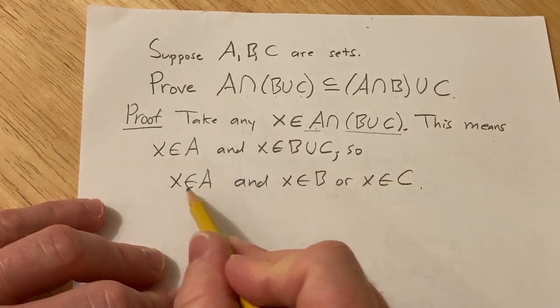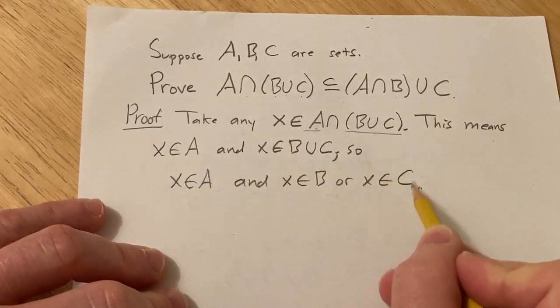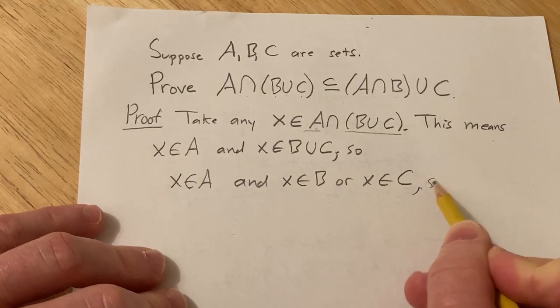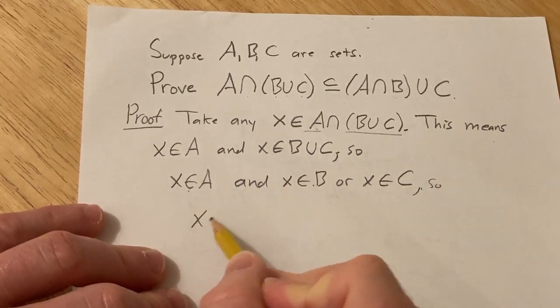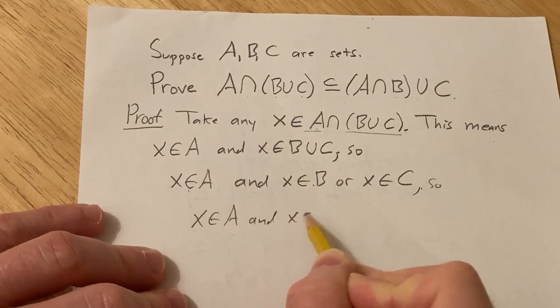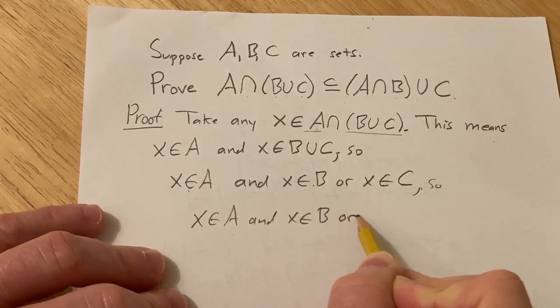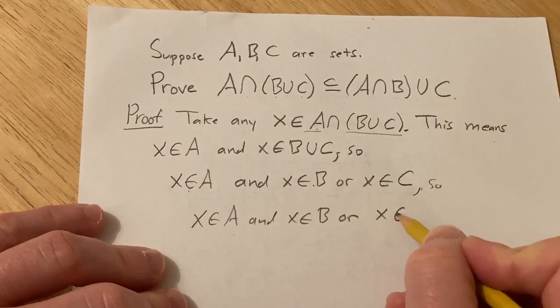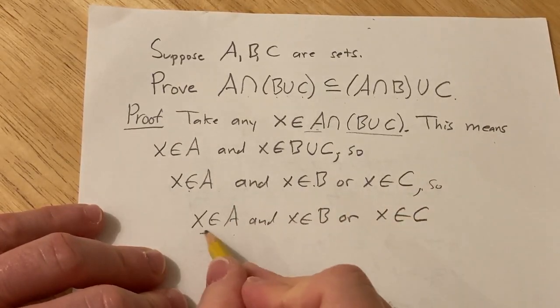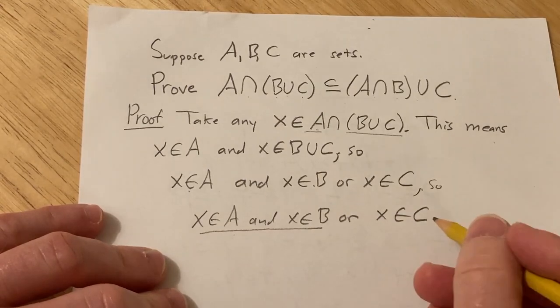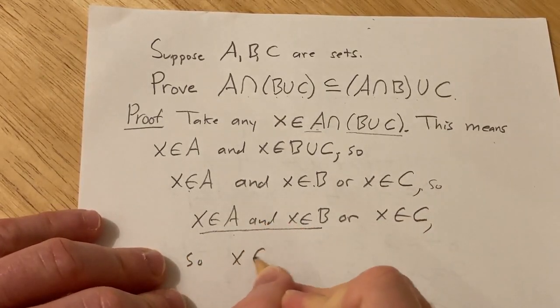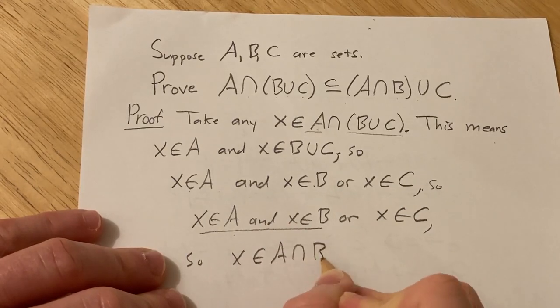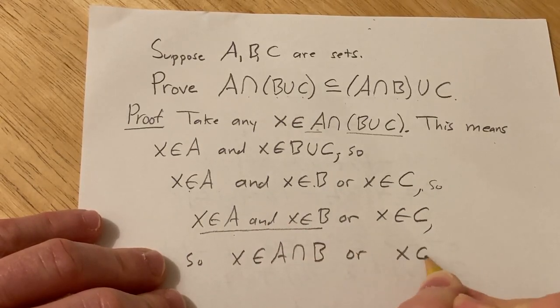And so now we can use some logic to deduce that this means that x is in A and x is in B, or x is in A and x is in B means that x is in the intersection. So x is in A intersected B or x is in C.